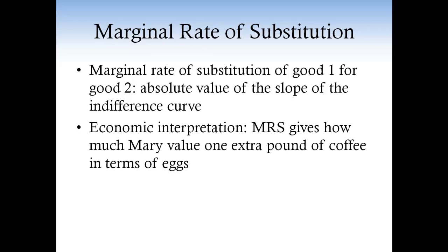The economic interpretation is that the marginal rate of substitution tells you how much a consumer values an extra unit of good one in terms of good two. For example, the value of an extra unit of coffee in terms of eggs. Are you simply saying that the MRS is a measure of how much Mary likes one extra unit of coffee in terms of eggs?